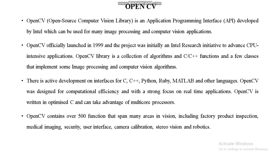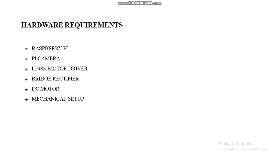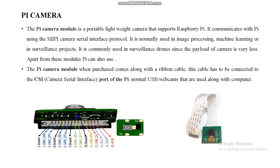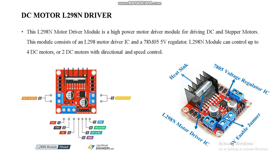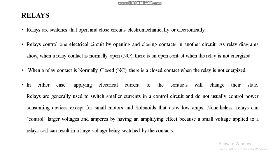OpenCV is a Python library used for image processing. Software requirements include Raspbian OS and the Python programming language. Hardware requirements include a Raspberry Pi, Pi camera, L298 motor driver, bridge rectifier, and DC motor. The Pi camera handles live streaming for the image processing system. The L298 motor driver helps drive the motor forward or backward. The ultrasonic sensor detects obstacles in front of the robot, and relays control the motors.